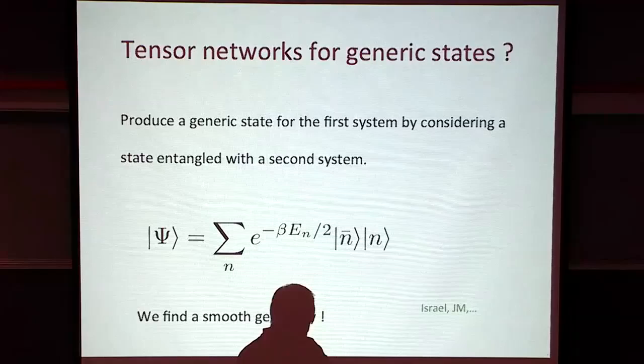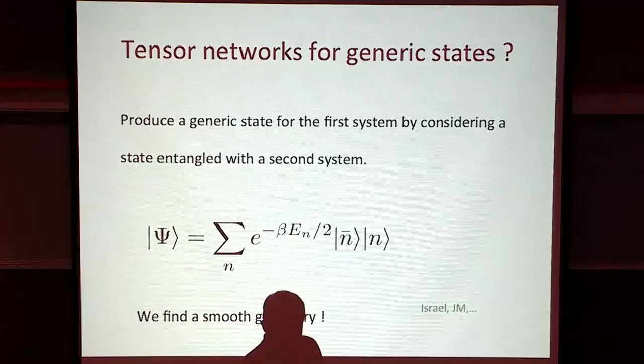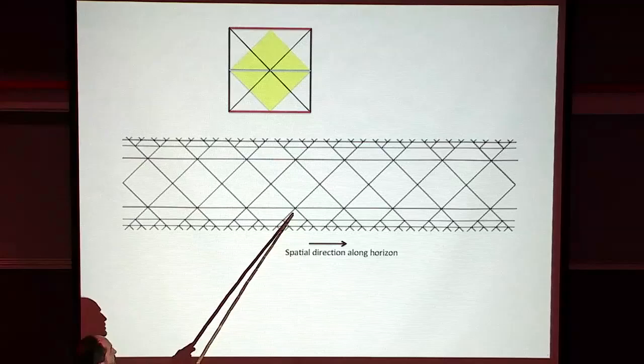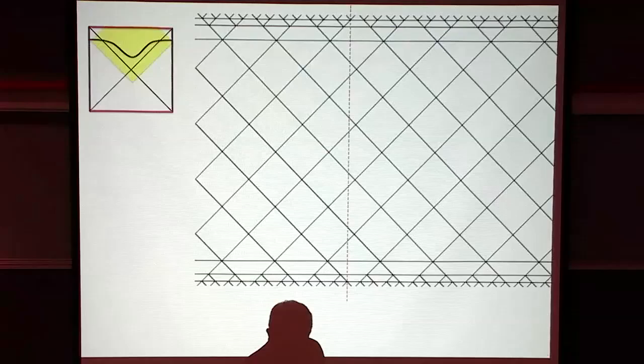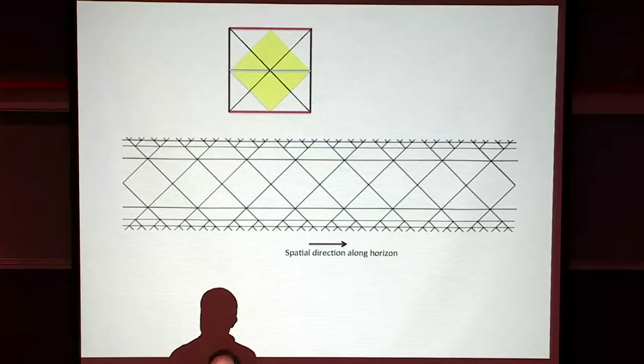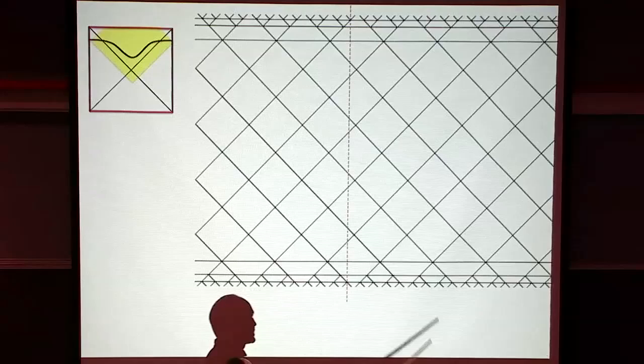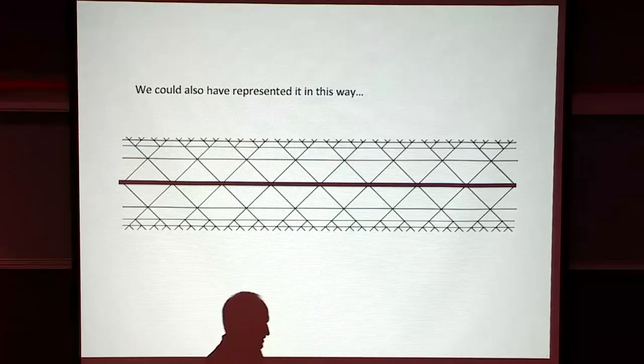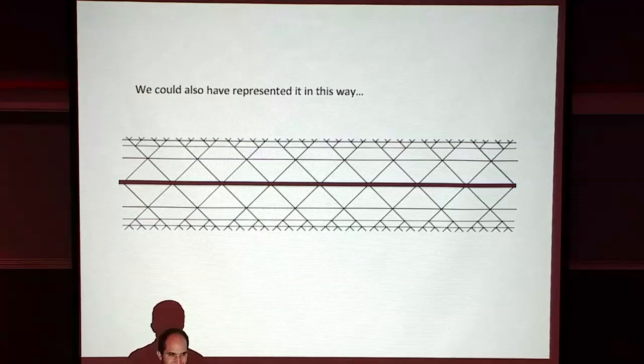You can do exactly the same thing with a two-sided black hole - it's exactly the same story, with a similar contraction of tensors. This would be the black hole at t=0. When we time-evolve it, it is natural that this network should represent it. We could also put something here more complex with a tensor that has many more indices - there are many different ways of increasing it, and one of them seems more natural.